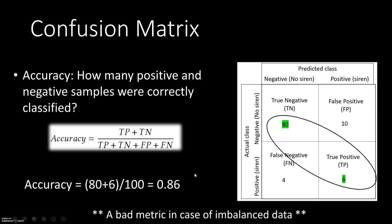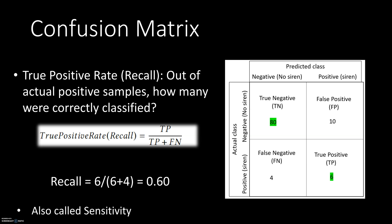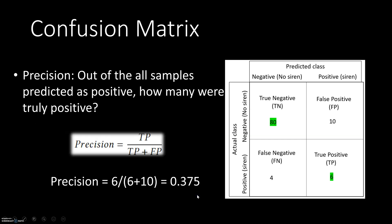The next metric is the true positive rate, also called recall or sensitivity. The question here is: out of the actual positive samples — which in our case was 10 — how many were correctly classified? We take the true positives and divide by the total actual number of positives. In our case, the recall is 60%.